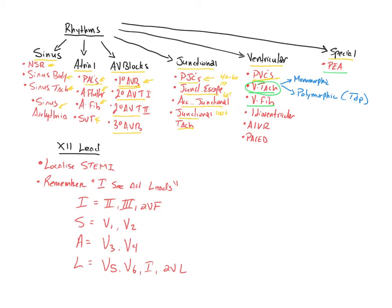And then you have different subcategories of VTAC. You've got monomorphic VTAC and polymorphic. And typically, polymorphic for the purposes of static cardiology is typically going to be torsade de pointe. And remember, torsade de pointe is managed a little differently than your run-of-the-mill monomorphic VTAC.